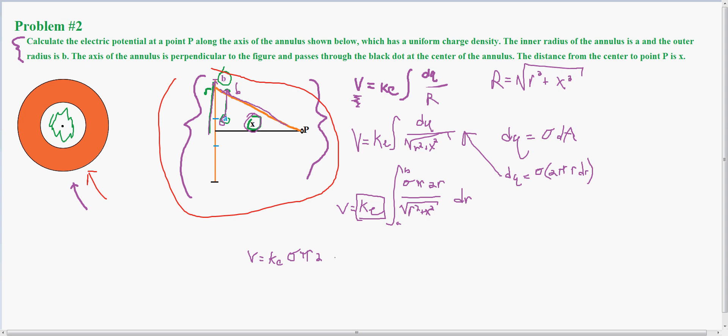Then I have the integral from A to B of (R squared plus X squared) to the negative one-half times R dr, which equals KE times all the constants, 2π.